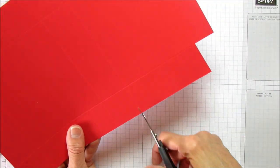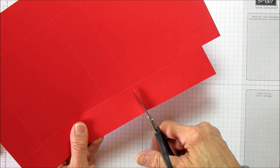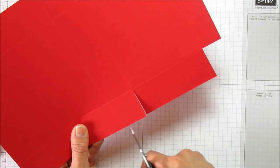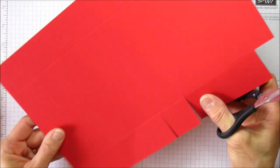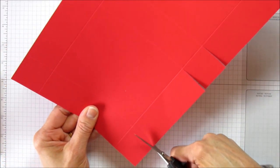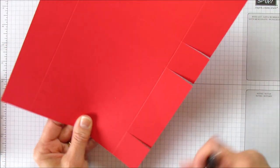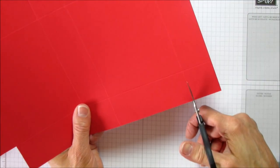Then we're going to cut up each score mark on the sides here up to the first score mark, and also the same on the other side.